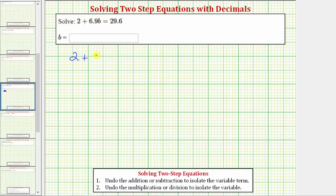We want to solve the equation 2 plus 6.9 times b equals 29.6. Because 6.9b means 6.9 times b, the value of b that makes 2 plus 6.9 times b equal to 29.6 will be the solution to the equation.